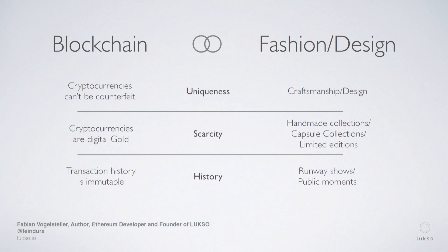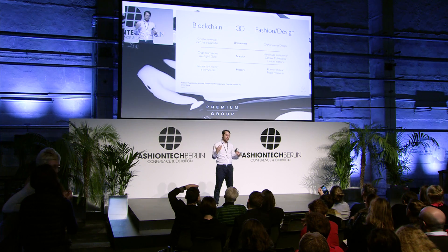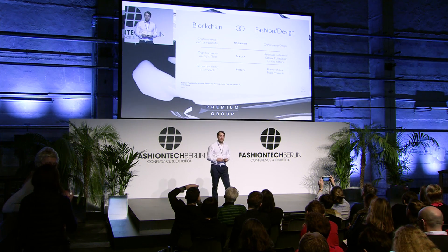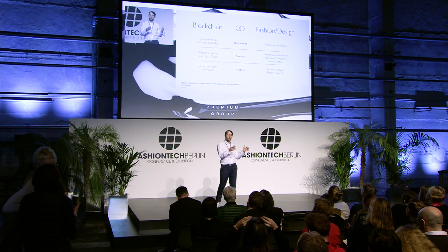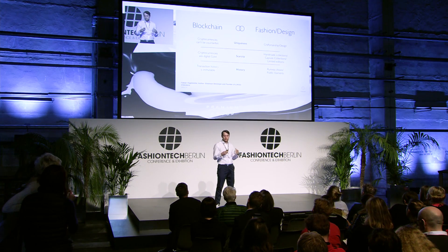Everything in the blockchain is tracked over time — you can see every account balance and how it changes over time. You can track any kind of object on the blockchain: you could register a bag, a land title, a house — everything — and everybody would see who the current owner is, who the previous owner was, and what happened. So the blockchain and the fashion industry have very much in common, because in fact the blockchain is the perfect base layer for fashion.